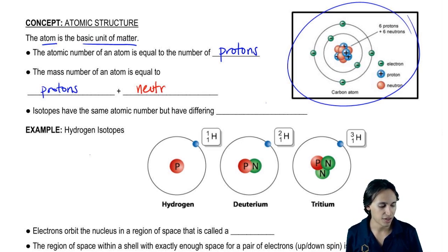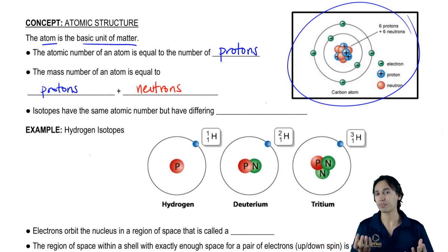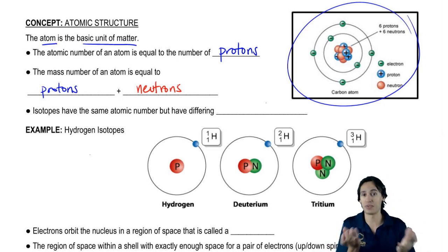Because remember that neutrons and protons have roughly the same mass. So if you have more neutrons, that's actually going to affect how heavy your atom is.